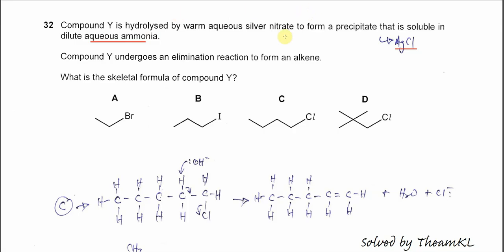This information tells us the precipitate is silver chloride, meaning compound Y contains chlorine. The halogen in compound Y is chlorine, so the answer could be C or D.